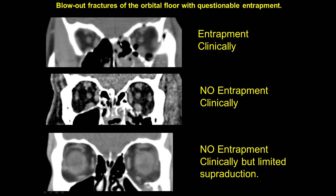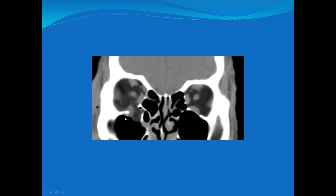Here are three examples where the extraocular muscle, the inferior rectus, looks abnormal — it has a rounded appearance instead of the normal horizontal appearance. One was entrapped, one was not entrapped, and one was not entrapped but had limited superduction. By CT, it's really hard to tell if there's entrapment, and usually there is no entrapment. Ophthalmologists note that radiologists often suggest entrapment, but in adults in particular, it's rarely present. In children with trapdoor-type fractures — where bone breaks and snaps back — it's much more common. Even in one case where the muscle was wrapped around the fractured orbital floor, there was no entrapment.